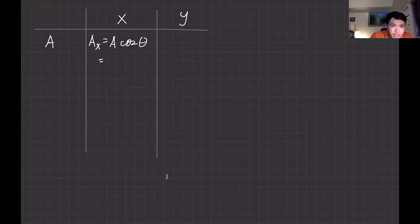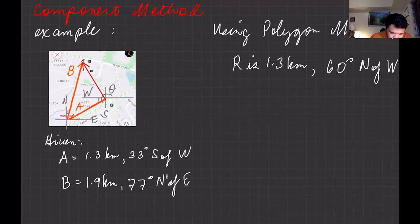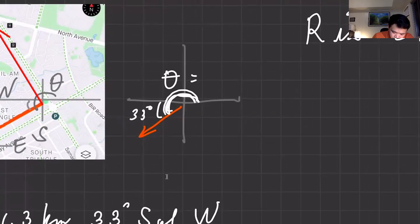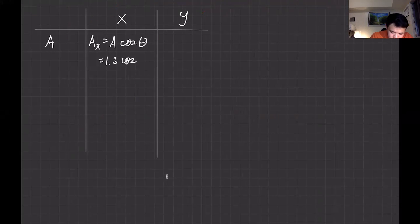Ax equals A cosine theta — that's 1.3 kilometers times cosine of the angle. The critical part is you're going to use the angle with respect to the positive x-axis. Here the vector is 33 degrees south of west, so you take 180 plus 33, which gives 213 degrees. That's the angle you use. So 1.3 cosine of 213 degrees gives an answer of negative 1.09.